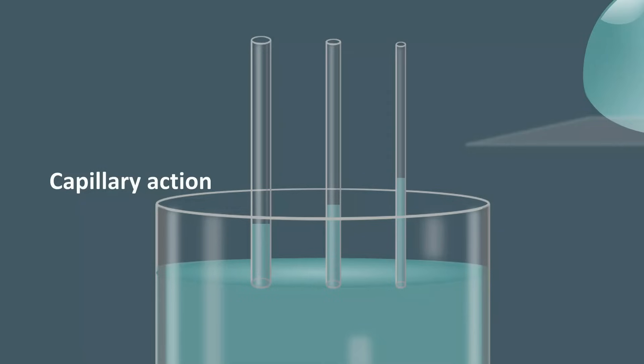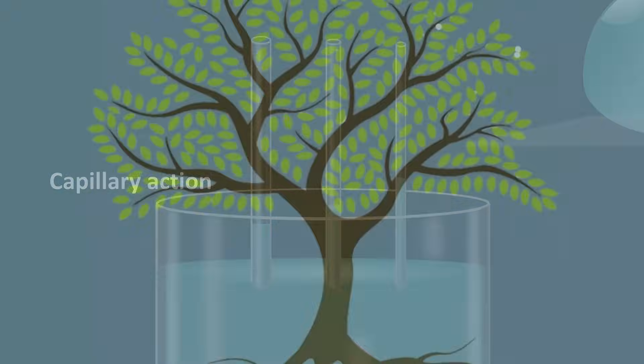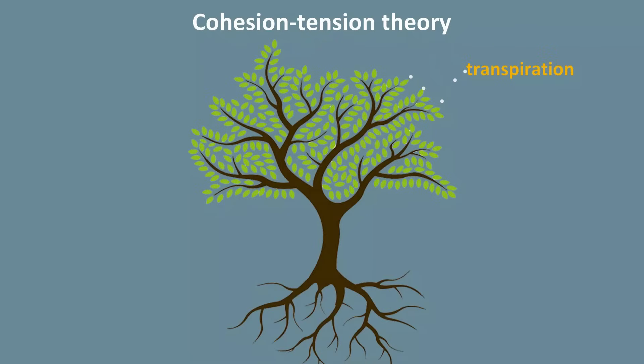Water adhesion and cohesion play important roles in water transport in trees as well. The theory explaining the transport of water in vascular plants, including trees, is called the cohesion-tension theory.